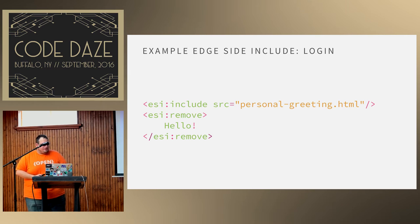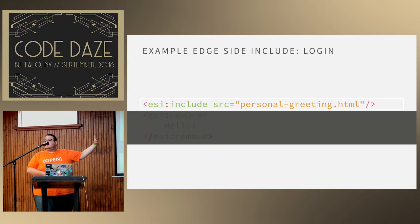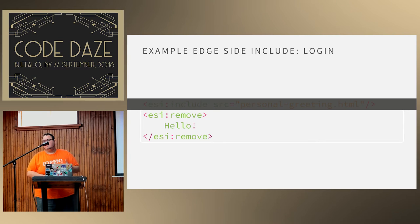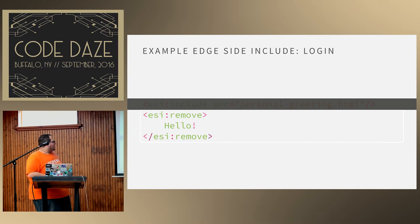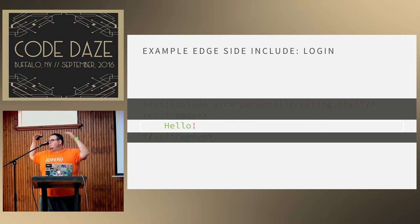ESIs use two tags: the ESI include tag — an XML tag like '<esi:include src="..." />' — which is what your Varnish or Squid will pull in as a cached resource. You also have the ESI remove tag, which is a more static, less memory-intensive fallback that will be removed if the include is successful. So here I'm including a personalized greeting — if I'm logged in, I get a personalized message; otherwise you just get a generic 'hello.' It works with any language that's behind the cache.